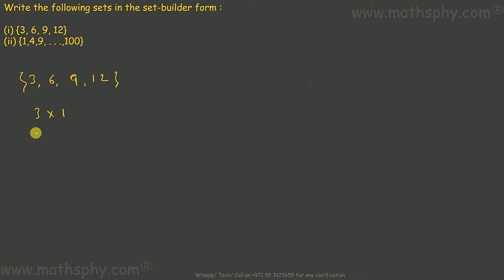Which is 3 times 1, 3 times 2, 3 times 3, 3 times 4. 3 times 1 is 3, 3 times 2 is 6, 3 times 3 is 9, 3 times 4 is 12.